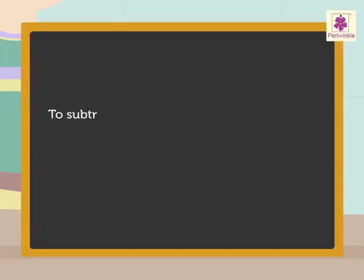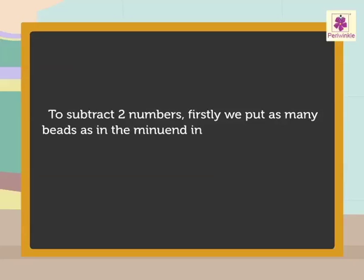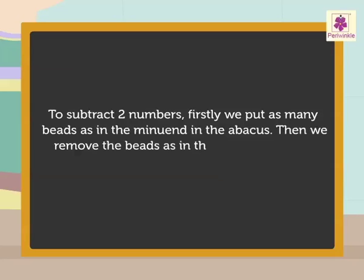So, to subtract two numbers, firstly we put as many beads as in the minuend in the abacus. Then, we remove the beads as in the subtrahend from the abacus.